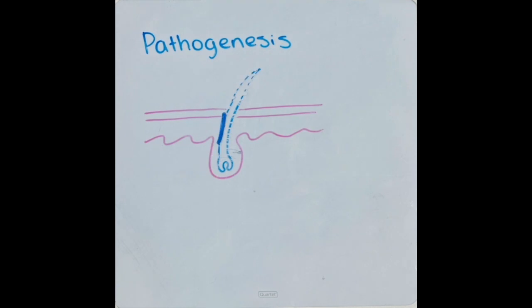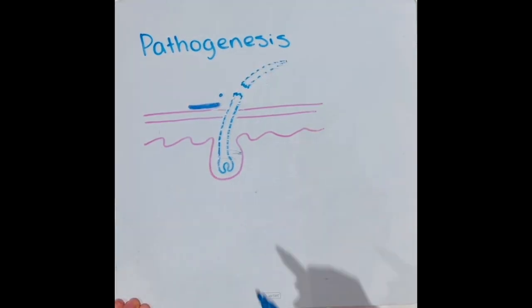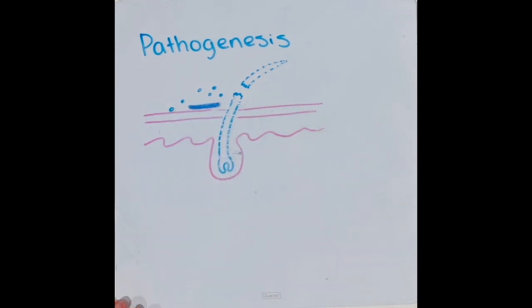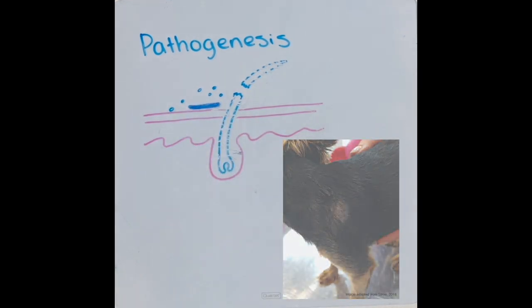The brittle hair then grows, and the hyphae move with it to the skin's surface, where they produce Arthrocynidia that disperses to amplify the prevalence of disease. The brittle hair then breaks, which causes alopecia.